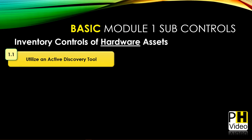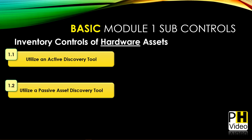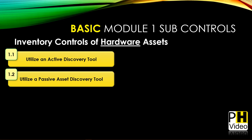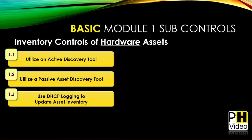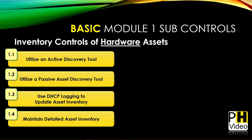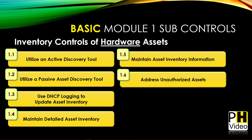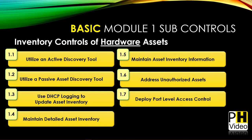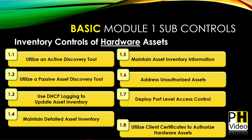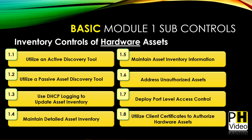These are the modules covered in Basic Module One: Control 1.1 — utilize an active discovery tool; 1.2 — utilize a passive asset discovery tool; 1.3 — use DHCP logging to update inventory assets; 1.4 — maintain detailed asset inventory; 1.5 — maintain asset inventory information; 1.6 — address unauthorized assets; 1.7 — deploy port-level access control; and 1.8 — utilize client certificates to authorize hardware assets.